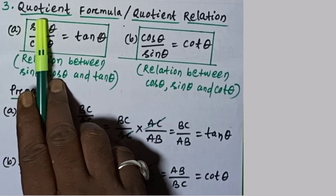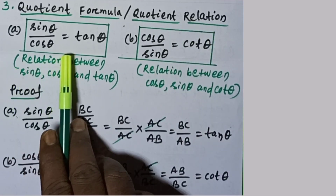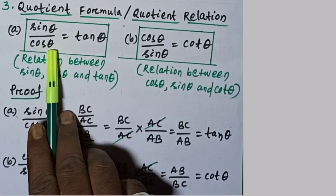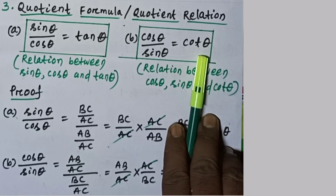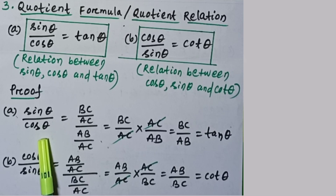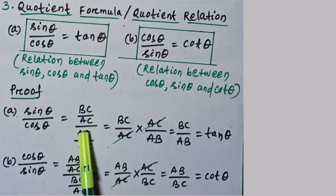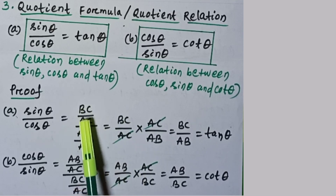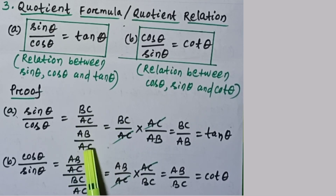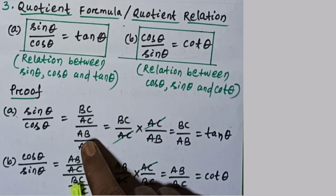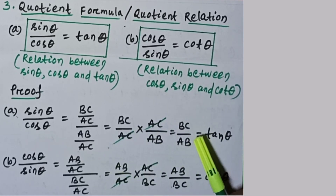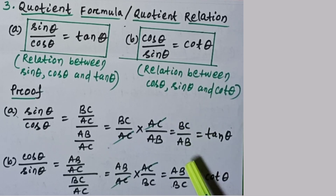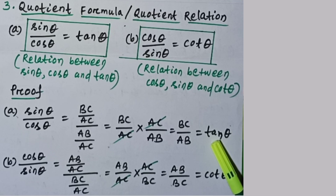There are two quotient formulae. The first is sin θ / cos θ = tan θ. Proof: sin θ = BC/AC and cos θ = AB/AC. So sin θ / cos θ = (BC/AC) ÷ (AB/AC) = (BC/AC) × (AC/AB). AC cancels, leaving BC/AB. We know BC/AB is tan θ. So sin θ / cos θ = tan θ.